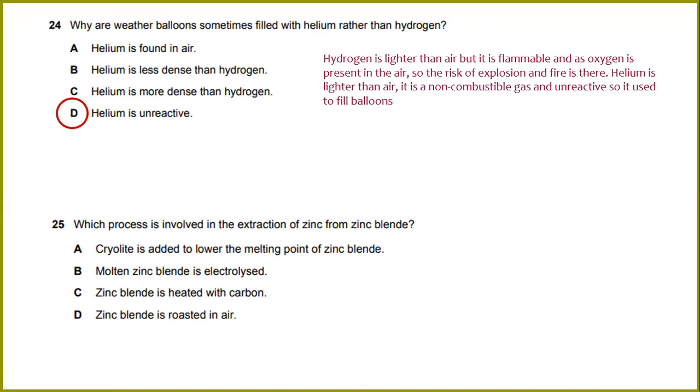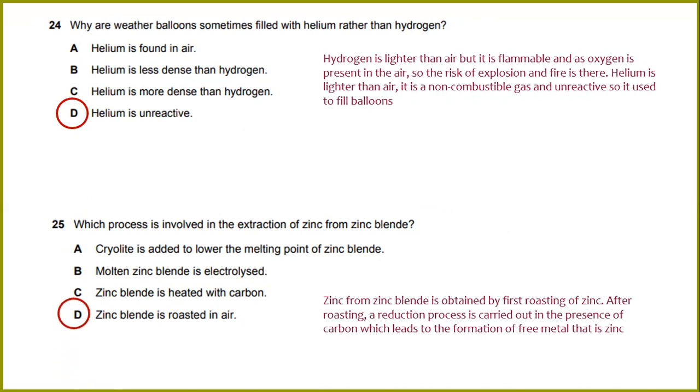Which process is involved in the extraction of zinc from zinc blende? The answer will be zinc from zinc blende is obtained by first roasting of zinc. After roasting, a reduction process is carried out in the presence of carbon, which leads to the formation of zinc metal. So the answer will be D.